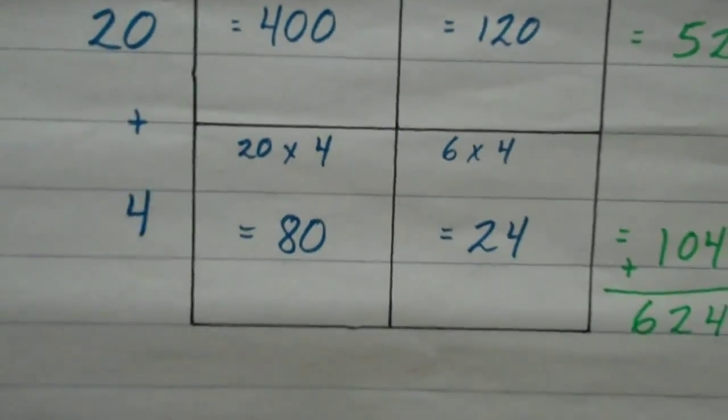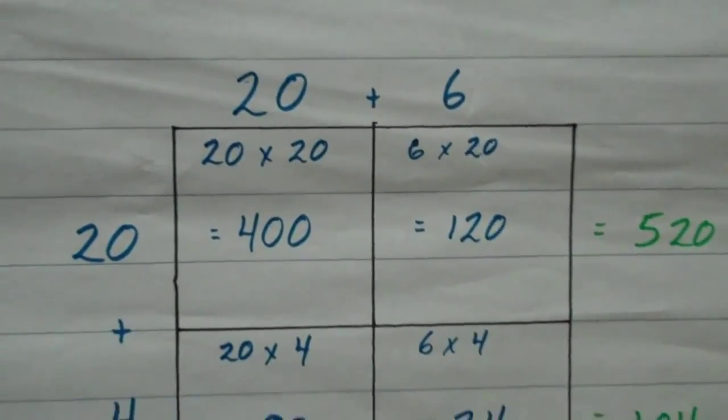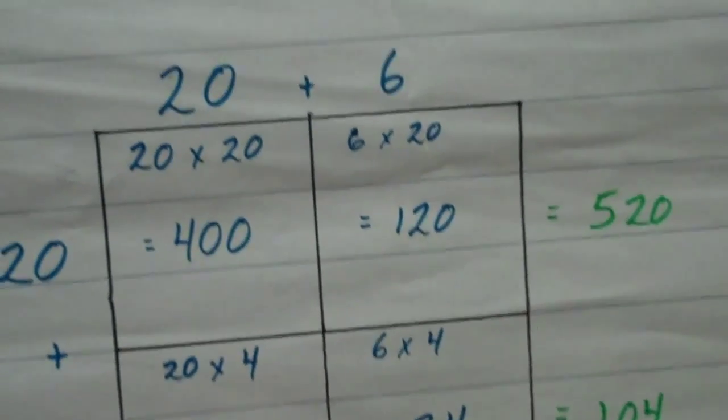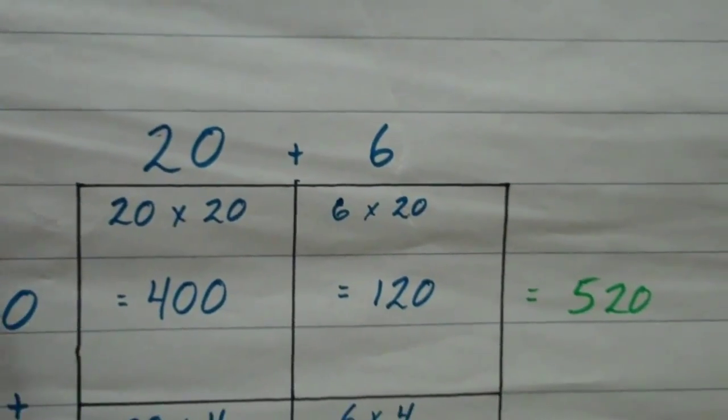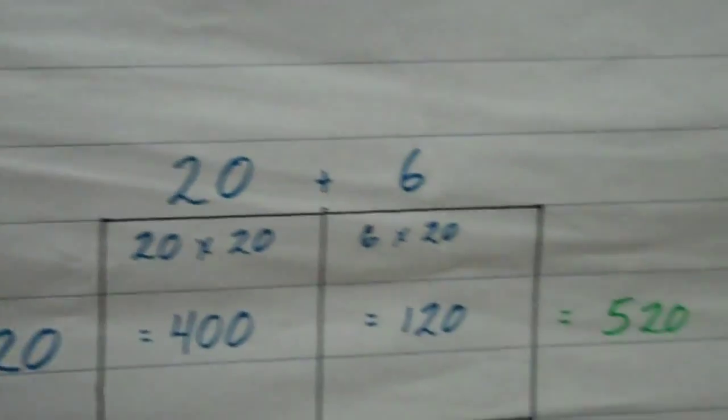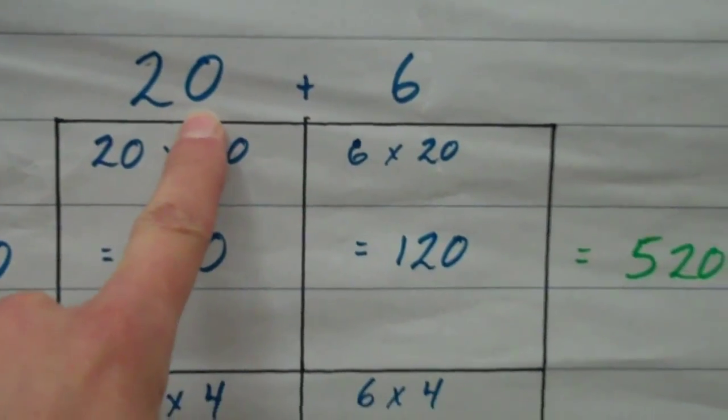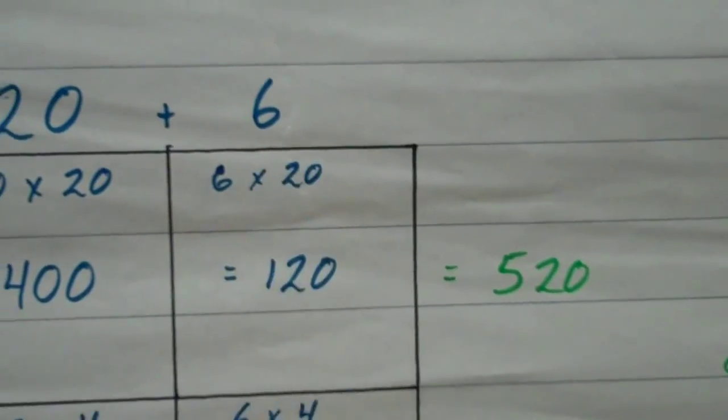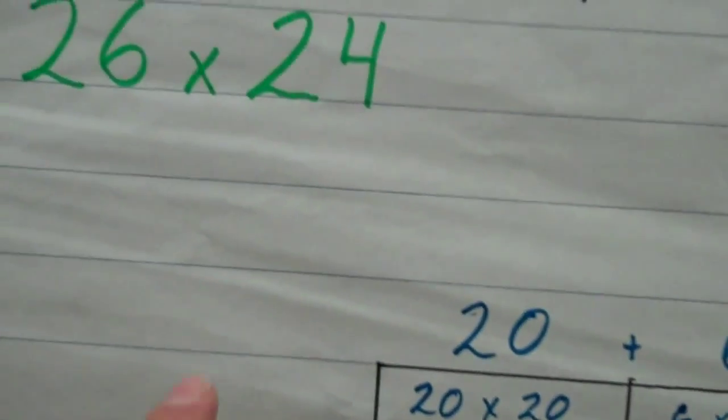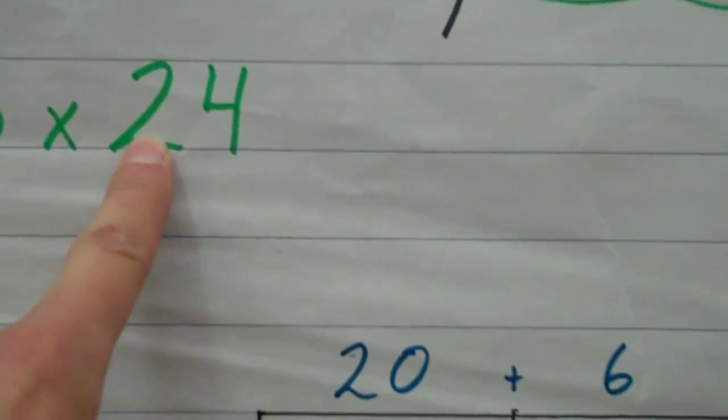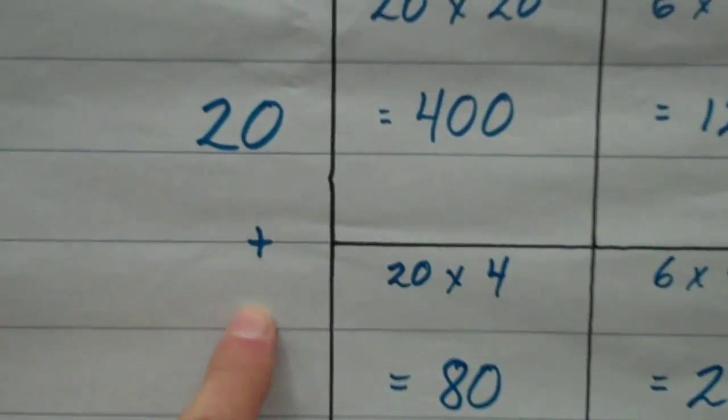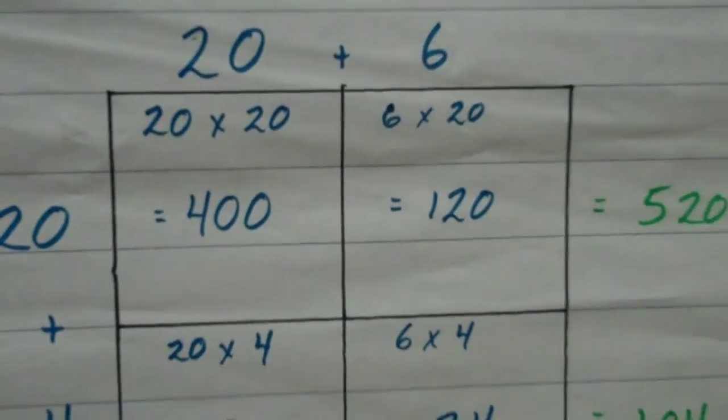What I have done is I have created two columns, two rows, so basically four squares. Over top, I have taken the number 26, and according to place value, I have written 20 plus 6 at the top. And then I take my second number of my equation, 24, and I write 20 plus 4 down the side of my array.